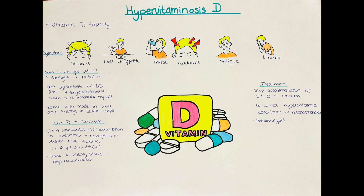To correct severe hypercalcemia that may be co-occurring, calcitonin and bisphosphonate drugs can be used. Calcitonin works by reducing bone breakdown of calcium as well as reducing the kidney's calcium reabsorption. In certain cases where the kidneys are very damaged, hemodialysis may be needed, though this is luckily rare.